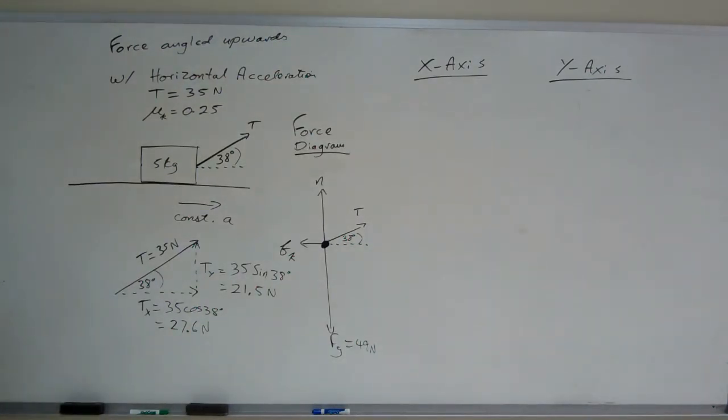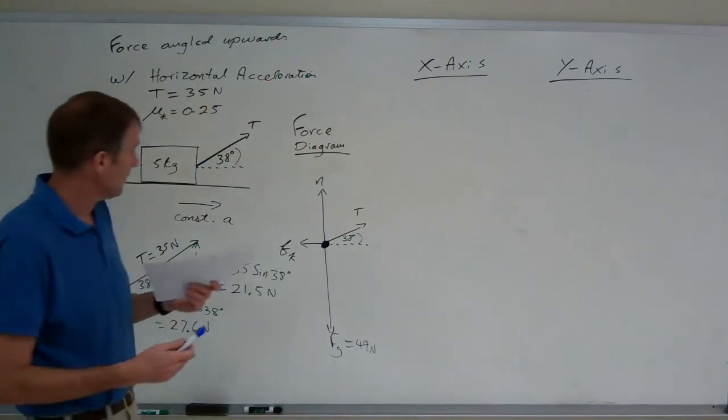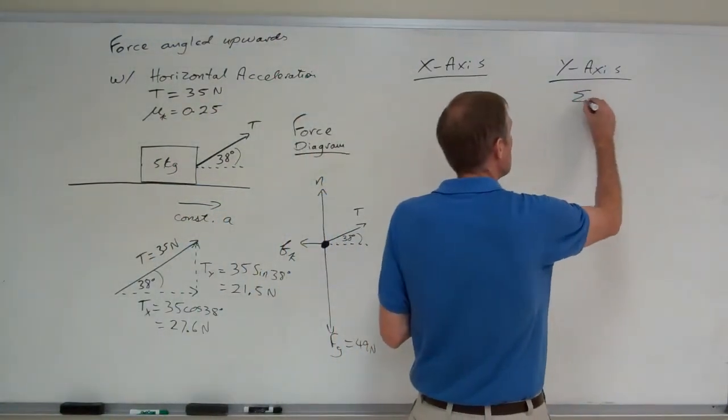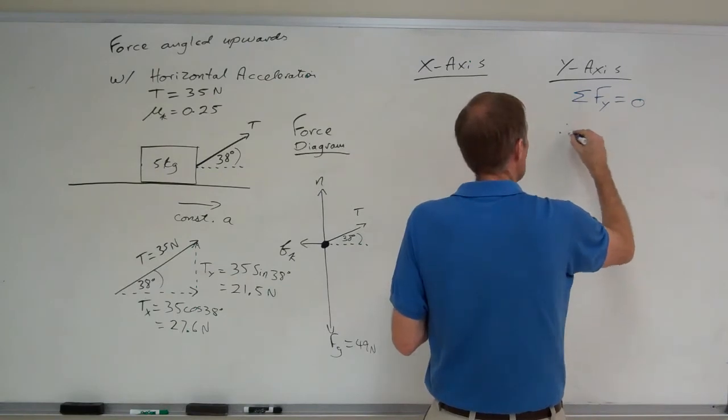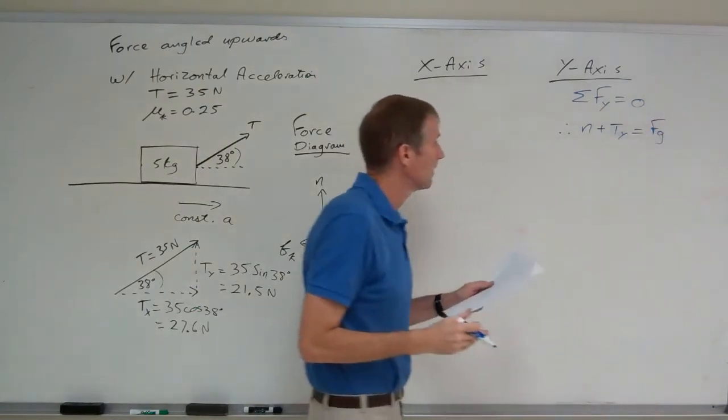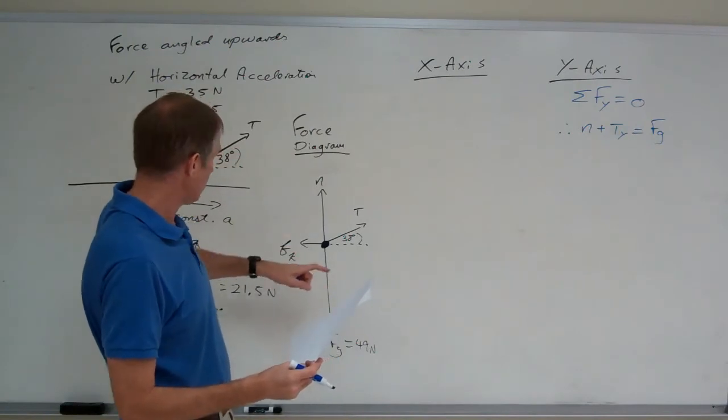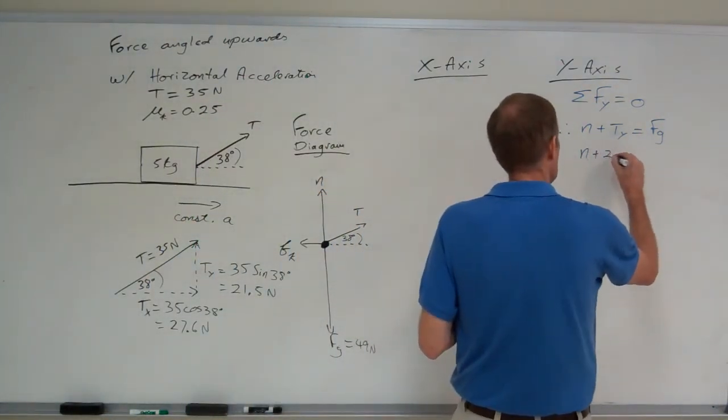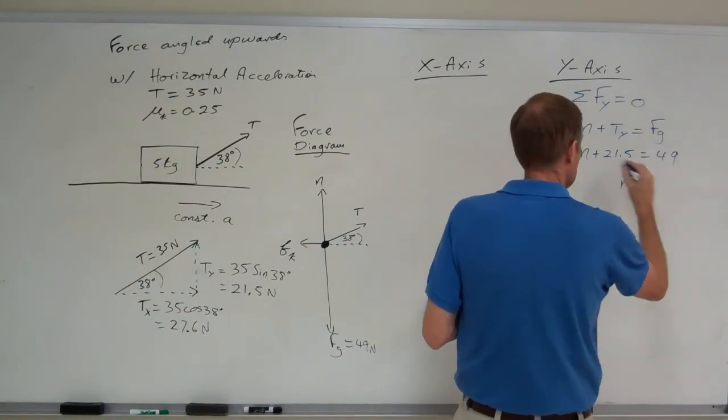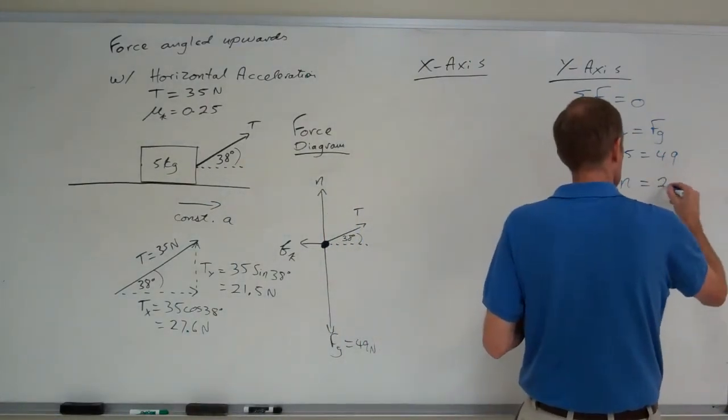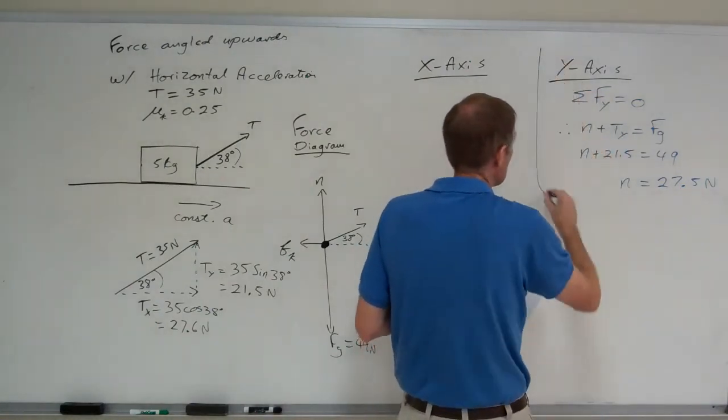Okay. Now I'm going to start in the y-axis, because I need to calculate the friction. And I need the normal force for that. There's no motion in the y-axis, so it's in equilibrium in the y-axis. Net force is equal to zero. Therefore, the two upward forces, n and ty, equals the one downward force of the weight. Put in your numbers. Let me see. The weight's 49. Ty is 21.5. So, n plus 21.5 equals 49. Subtract the 21.5 to the other side, and you get 27.5.